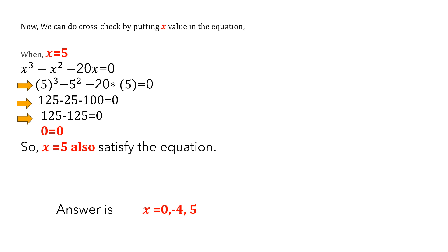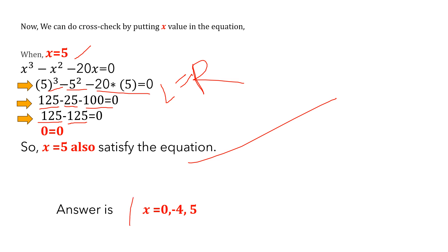Now our last value is x equals 5. That gives 5 cubed minus 5 squared minus 20 times 5. 5 cubed equals 125, 5 squared equals 25, and 20 times 5 equals 100. So 125 minus 25 minus 100 equals 0. Left-hand side equals right-hand side, so x equals 5 also satisfies the equation. Our final answer is x equals 0, minus 4, and 5.